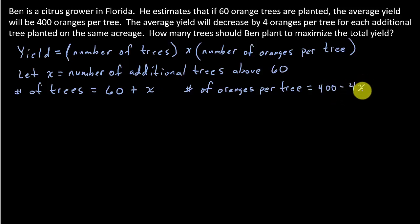and then the yield per tree, well, there's 1 additional tree added, so we're subtracting the 4 from the 400, and if it was 2 additional trees, then that would be 62,